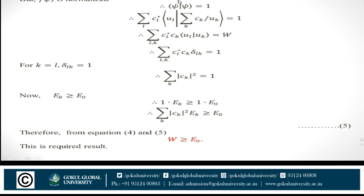Since the wave function is normalized, the normalization condition ⟨ψ|ψ⟩ = 1 gives Σ c_l* c_k ⟨u_l|u_k⟩ = 1. Substituting δ_lk for ⟨u_l|u_k⟩ and applying the condition for k = l, where δ_lk = 1, we obtain Σ_k |c_k|² = 1.